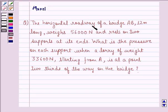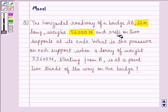The horizontal roadway of a bridge AB, 12 meters long, weighs 56,000 Newton and rests on two supports at its ends. What is the pressure on each support when a lorry of weight 33,600 Newton, starting from A, is at a point two-thirds of the way on the bridge?